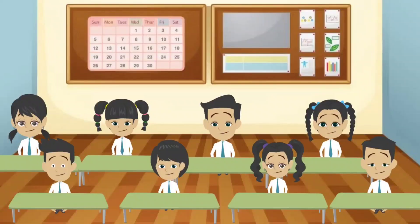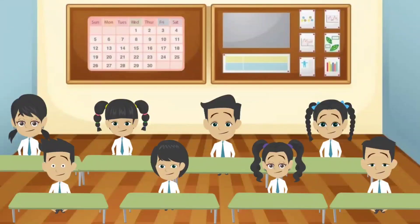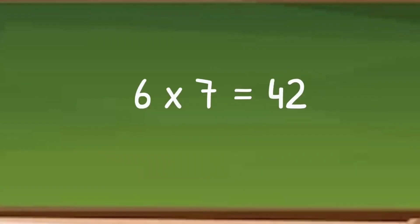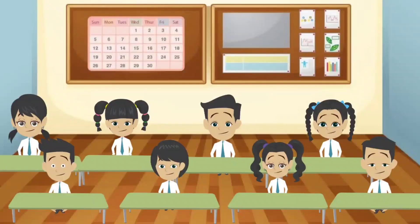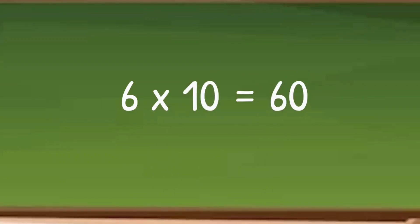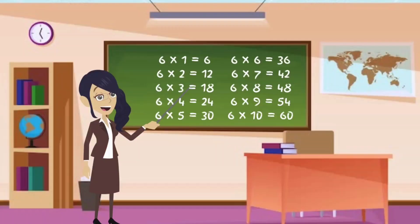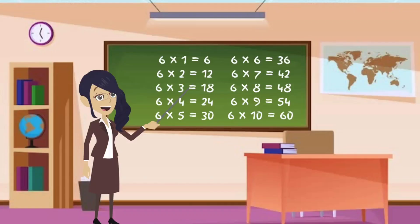6 5s are 30. 6 6s are 36. 6 6s are 36. 6 7s are 42. 6 7s are 42. 6 8s are 48. 6 8s are 48. 6 9s are 54. 6 9s are 54. 6 10s are 60. 6 10s are 60. Let's Do This Again Together.